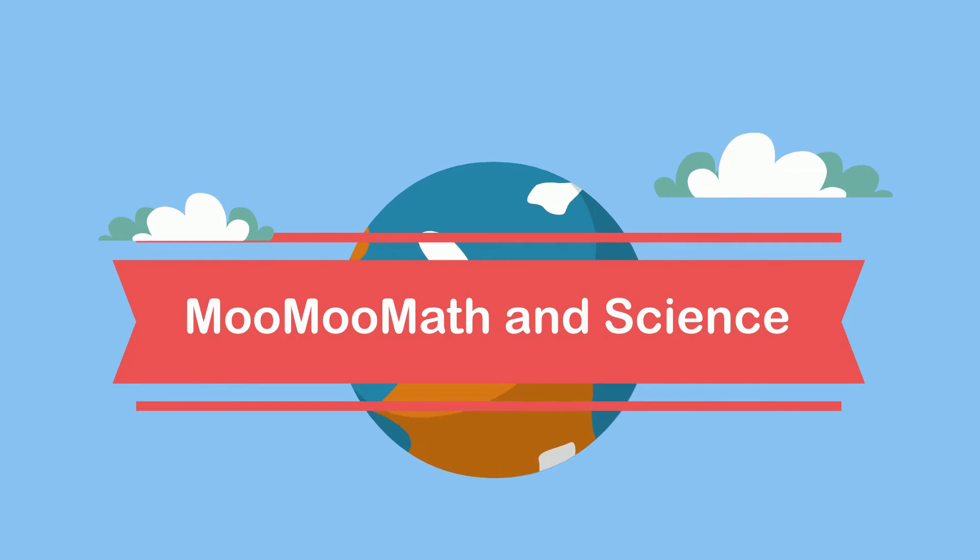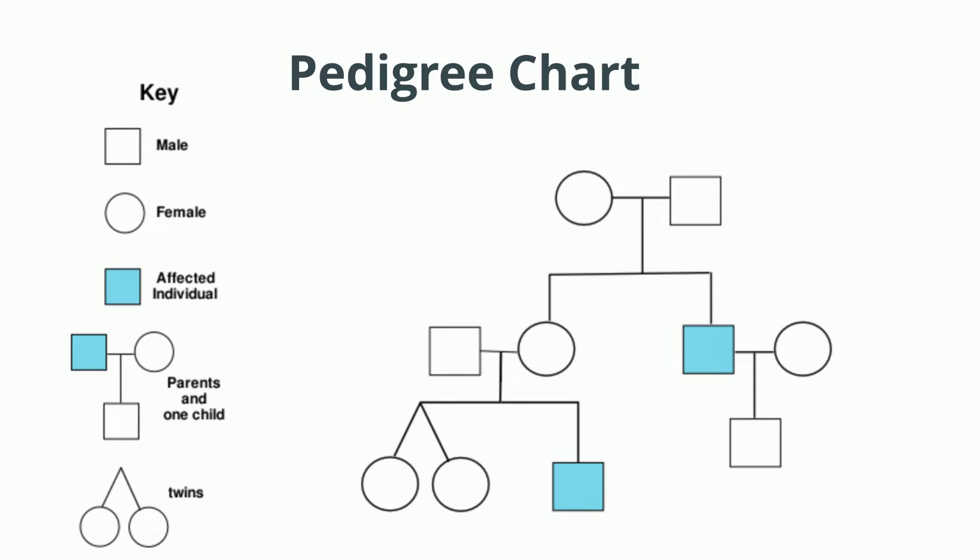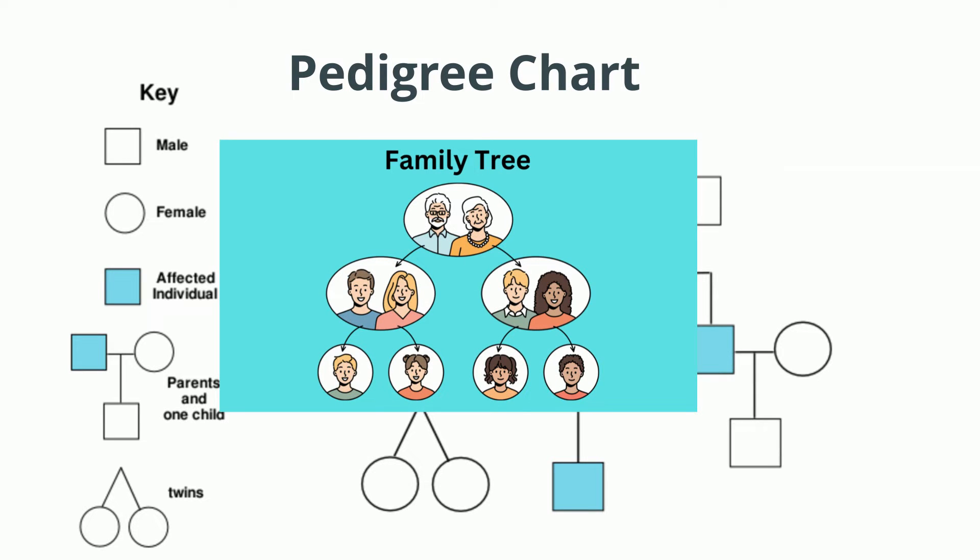Welcome to MooMooMath and Science. In this video, let's take a look at a pedigree chart, which is basically a chart of a family history or family tree. Many times it will track a disease or a trait through this family history.